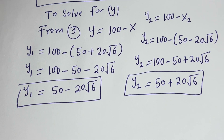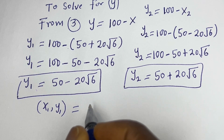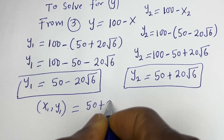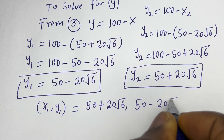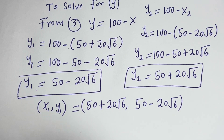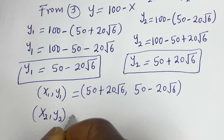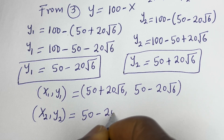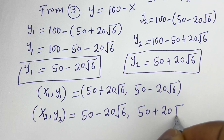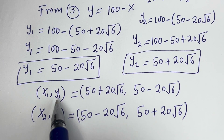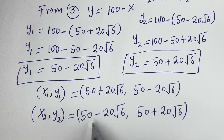Therefore, our final answers are: x₁ equals 50 plus 20 root 6, x₂ equals 50 minus 20 root 6. You can see that the value of y₁ equals the value of x₂, and y₂ equals x₁. We can check to confirm if this answer is right.